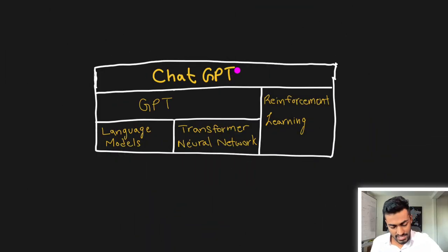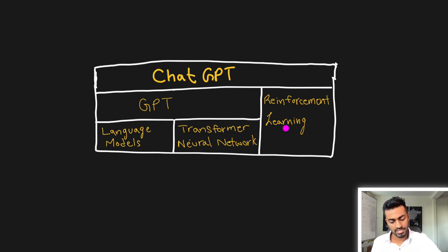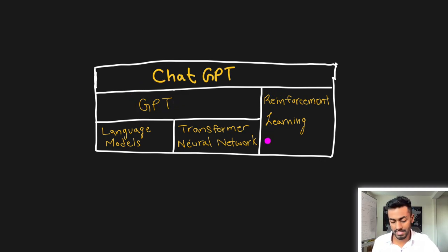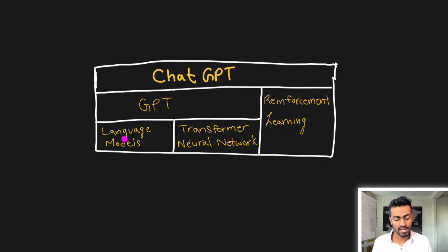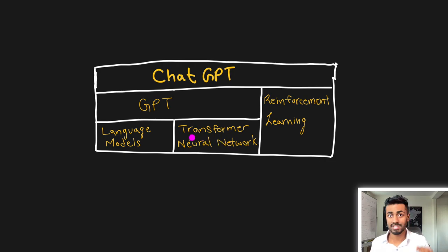To understand ChatGPT, we need to understand some more fundamental concepts. ChatGPT is built on top of GPT as well as the entire paradigm of reinforcement learning. The GPT models themselves are essentially language models, and they are also built on top of transformer neural networks. So let's take a look at each individually.